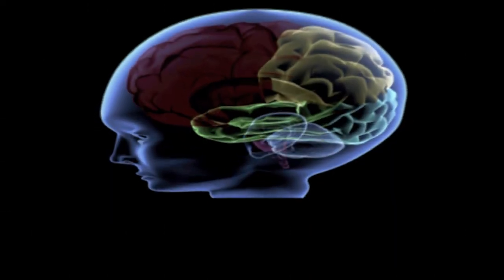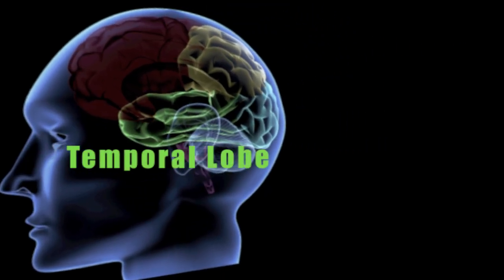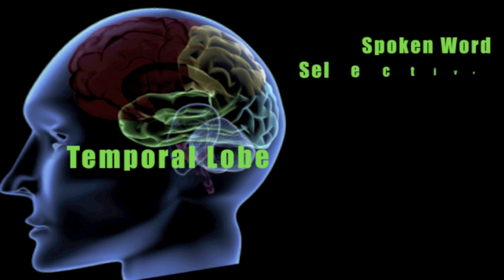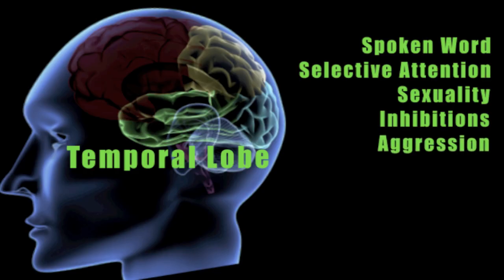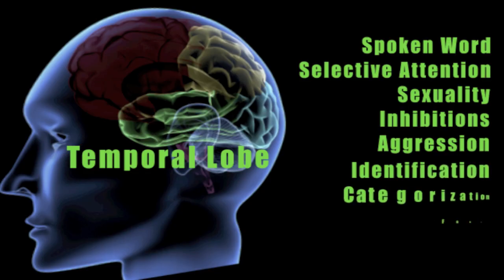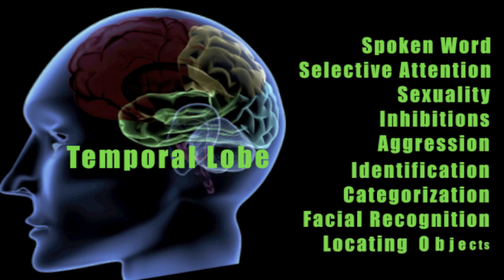The changes we see when the temporal lobe is injured include problems understanding the spoken word, problems with selective attention, and sexuality changes. A person with a temporal lobe injury may persistently talk, and we often see an increase in aggressive behavior. There are also problems identifying and categorizing objects, recognizing faces, and finding objects.